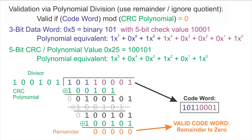If the codeword had been corrupted in a way detectable by a CRC, we would have gotten a non-zero remainder. The idea is: take a valid codeword that may have been subject to corruption, do the CRC computation by performing the polynomial division, and check the remainder. If the remainder is zero, either no corruption has occurred or it's corruption undetectable by a CRC. If the value is non-zero, you know for sure that a corruption has occurred.